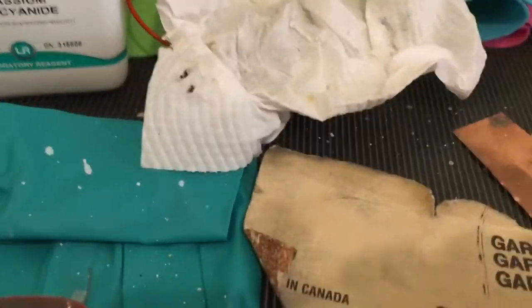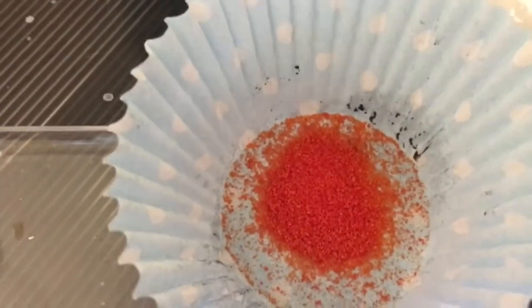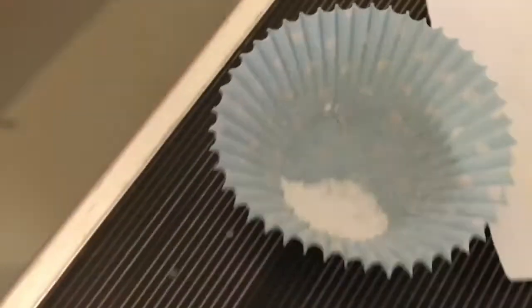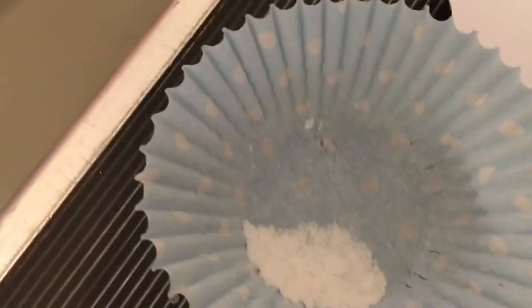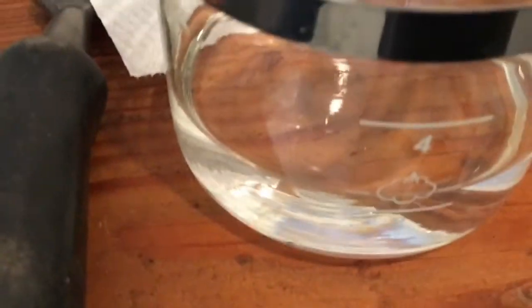It's time again to make some zinc hexacyanoferrate nanoparticles. I have one gram of potassium ferricyanide and one gram of zinc sulfate. I have 100 ml of distilled water for the zinc and this will be the mixing chamber. 100 ml of distilled water here.